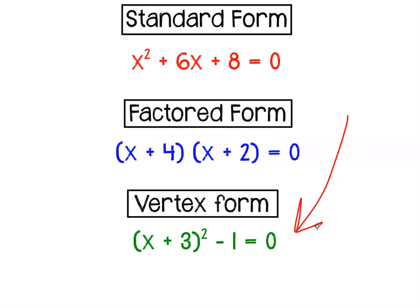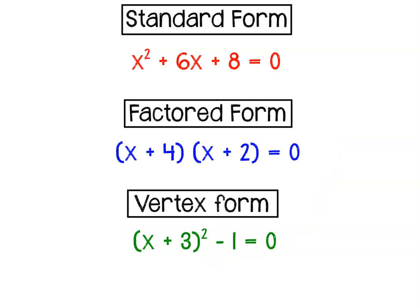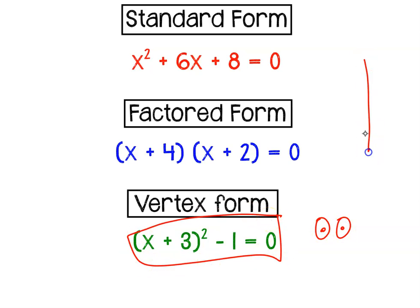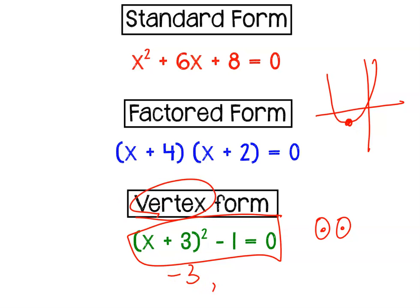And then we have vertex form — it could also be called completed square form, because this is what we get when we complete the square. It's not going to tell me the y-intercept, and it's not going to tell me the zeros, solutions, x-intercepts, or roots. But if I use my eyeballs and look at this equation, I know the parabola is going to have a vertex at negative three and negative one. And that's what we're going to work on today.